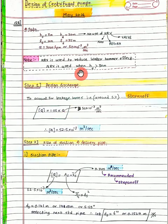So if the delivery head is greater than 30 meters, use of non-return valve is mandatory so as to avoid the water hammering effect. So moving on to the design procedure, the first step is calculating the discharge.